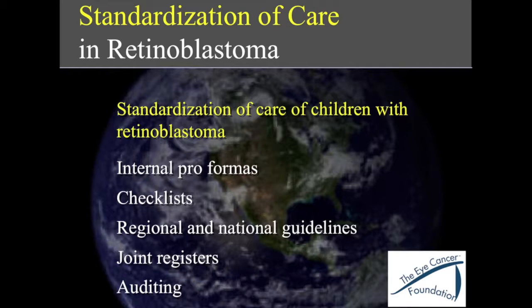And then you can do auditing. Auditing is very useful if you have more than one center treating retinoblastoma, and it can be informal — it doesn't mean government auditing. In the UK they have three centers treating retinoblastoma and they do self-audit. They can send people to the other center to audit their procedure and give advice if there are any areas that might be improved based on the experience of the center sending the auditor.